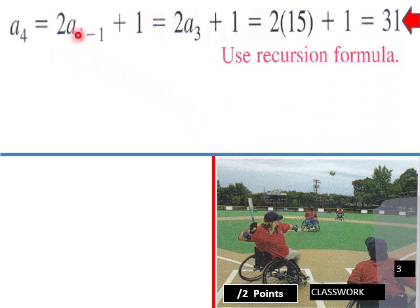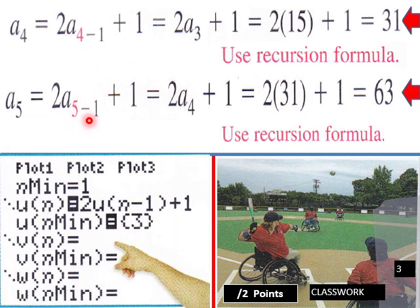Then a₄ = 2a₃ + 1 = 2 times 15 plus 1 = 31. And a₅ = 2a₄ + 1 = 2 times 31 plus 1 = 63. In your calculator, set min equals 1, then u(n) equals 2·u(n−1) + 1, and go back into your list to verify.